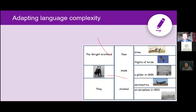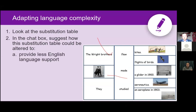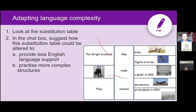Here's another example of a table we've already looked at. Please look at the table and suggest how you could alter it to firstly provide less language support — if you have learners who are slightly stronger, how would you make this more challenging? Or how would you help them practice more complex structures? Could you change the whole structure of the sentences to make them more complex? Have a think and write your answers in the chat box.